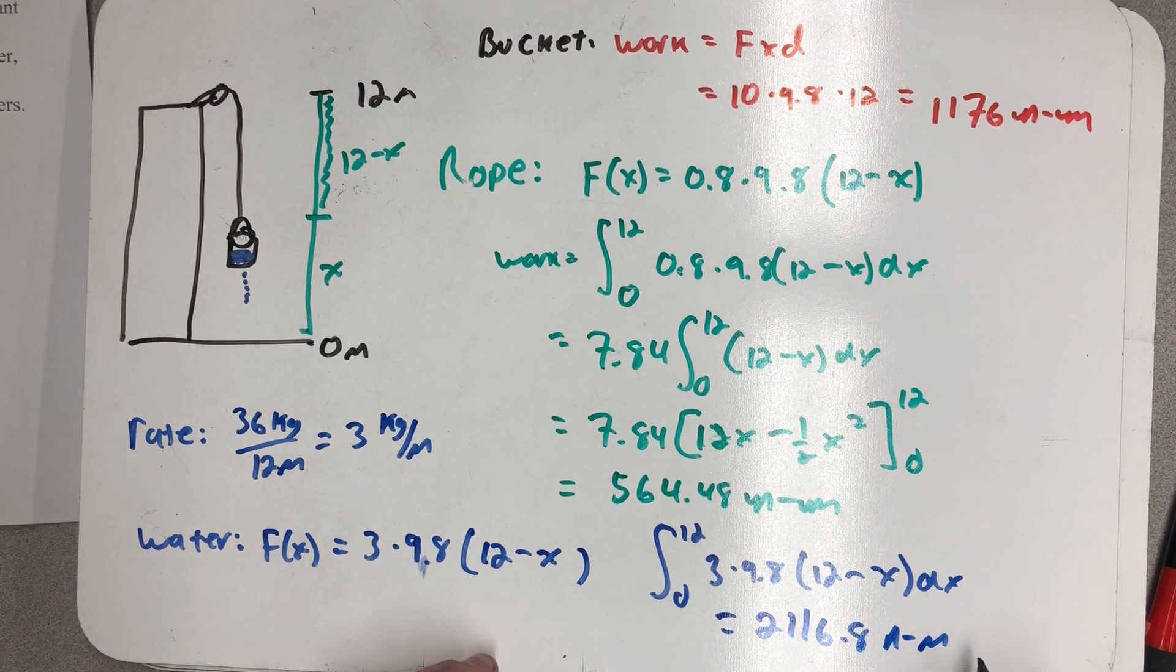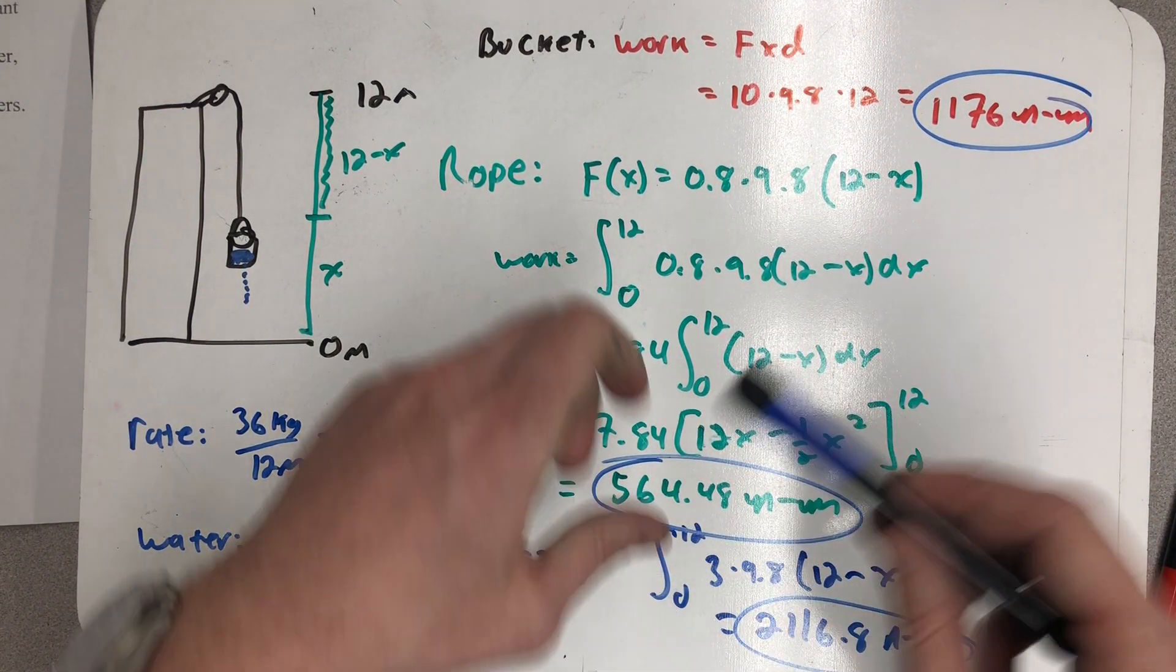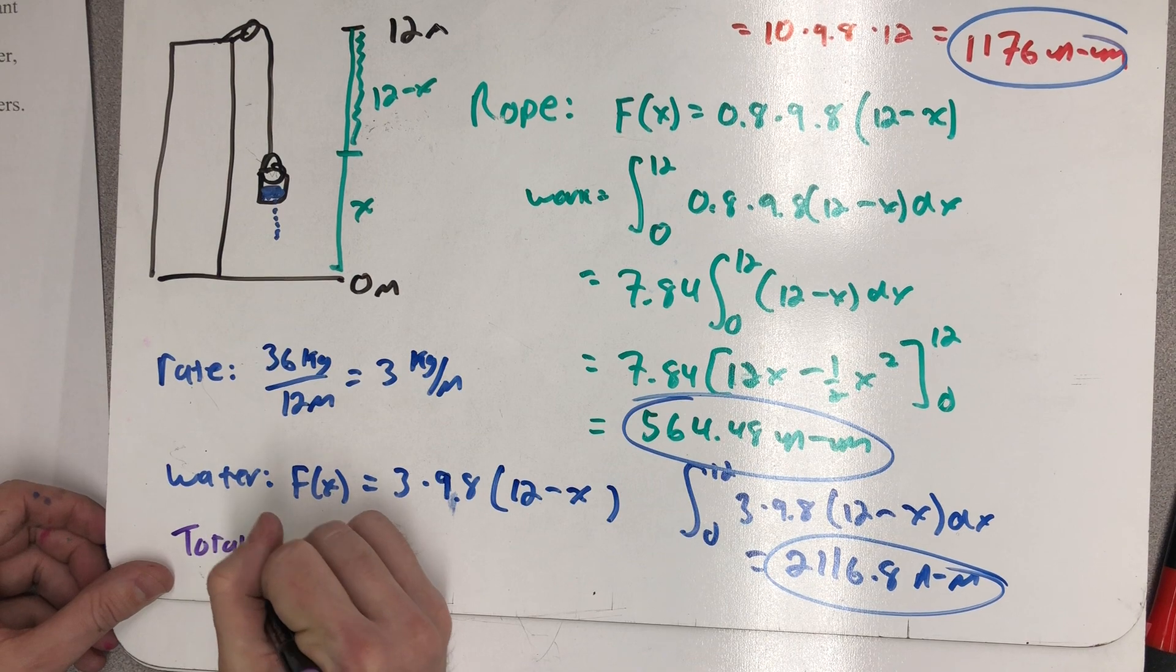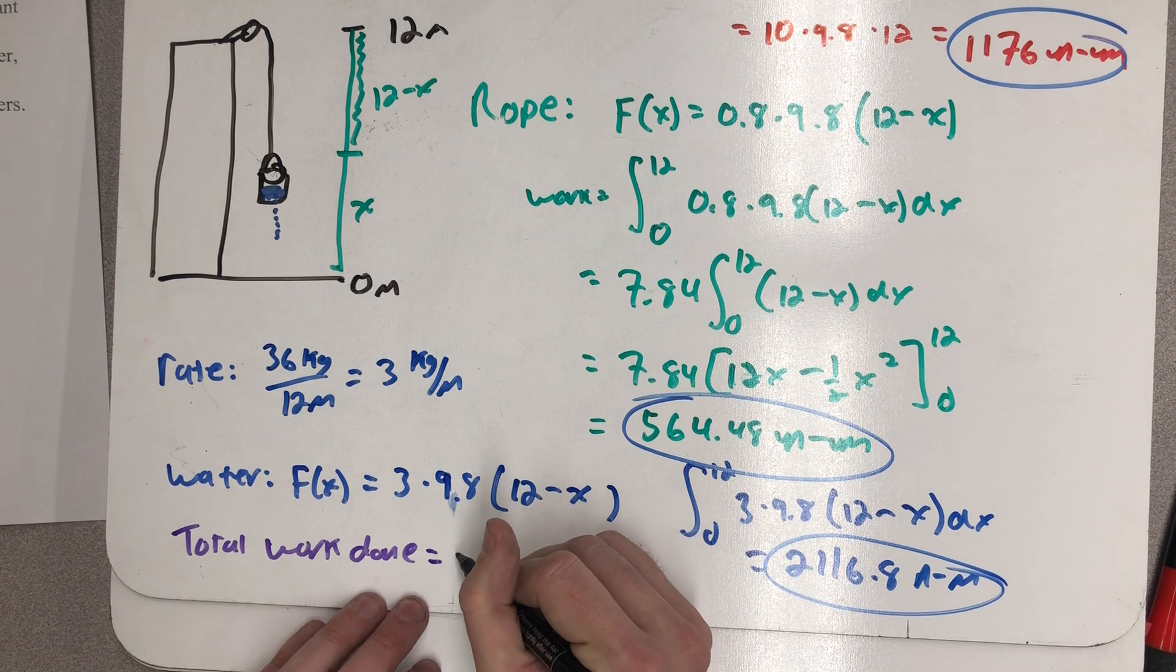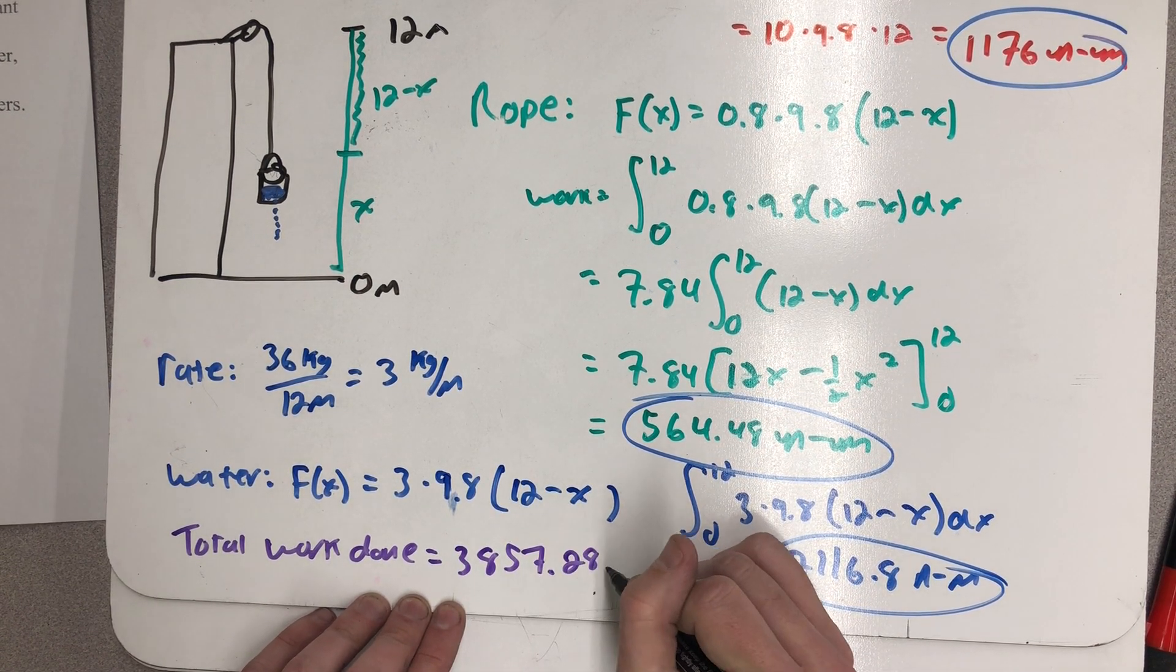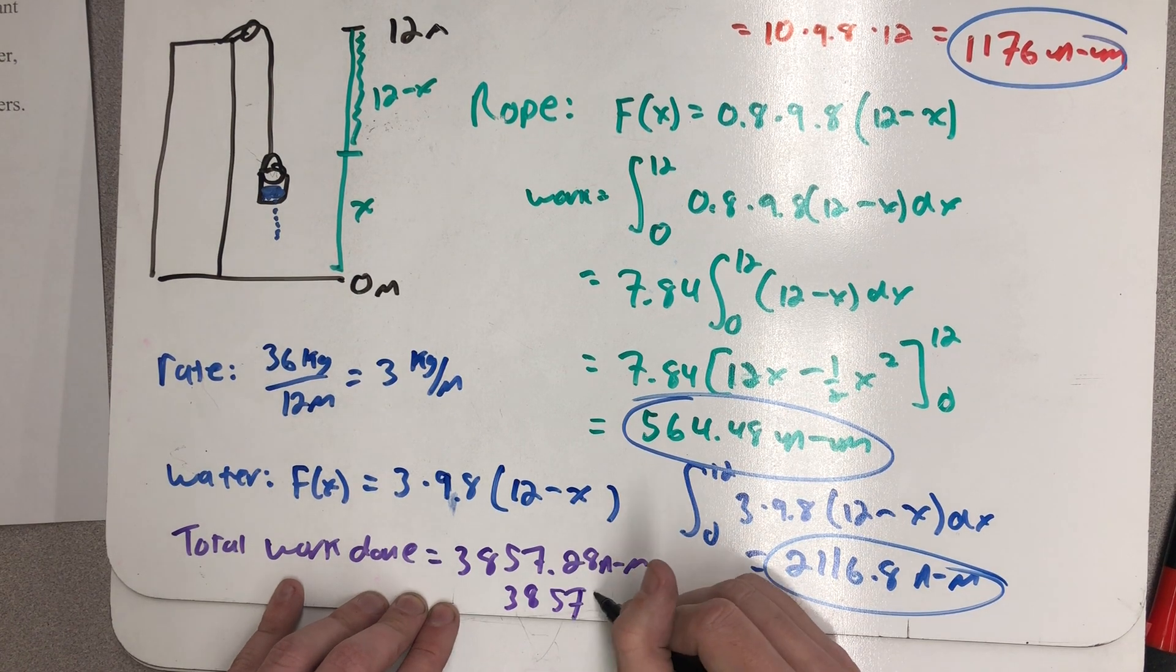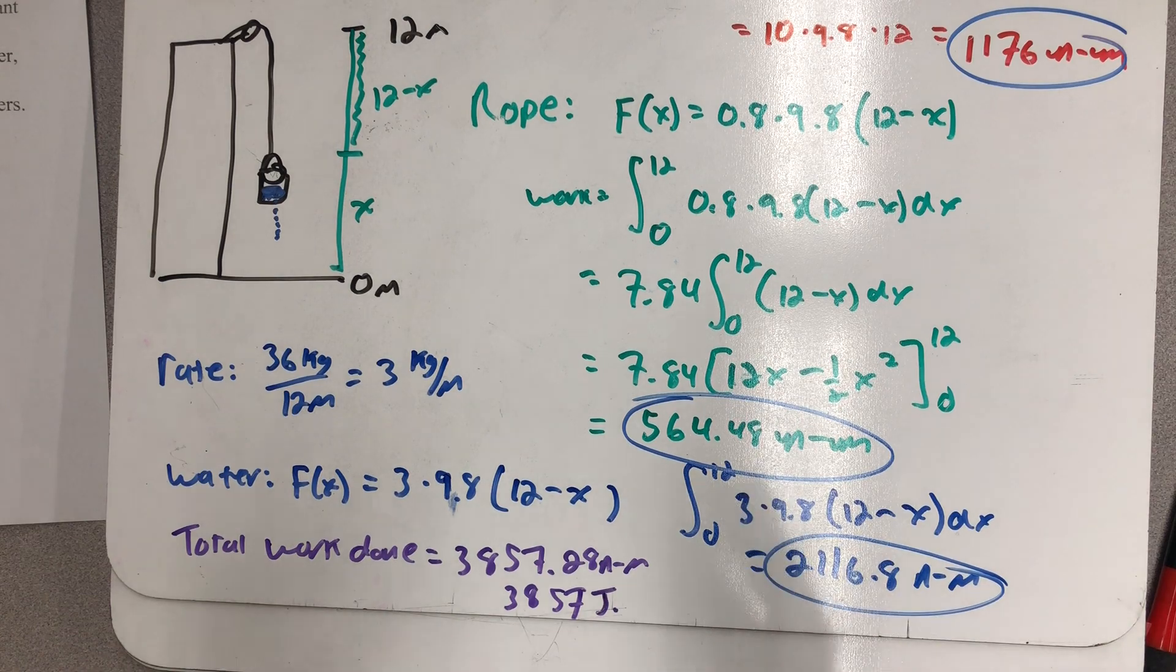So I found the work done to lift all three components separately. Now I just need to add those together to find the total work done. And when I do that, I get three thousand eight hundred fifty seven point two eight newton meters, or I guess it would be probably sufficient just to say three thousand eight hundred fifty seven joules. Now we found the work of lifting that whole system.